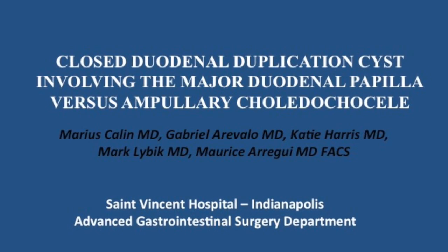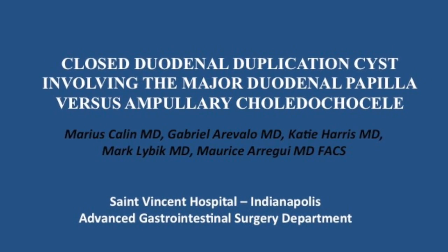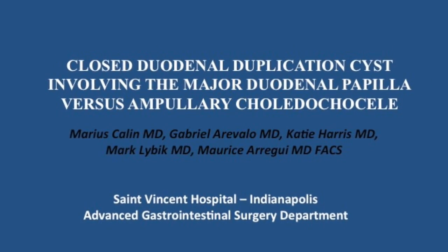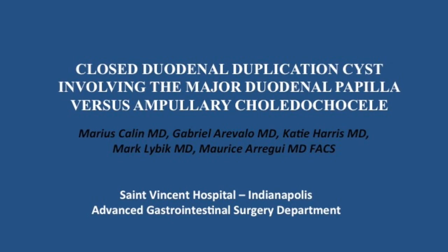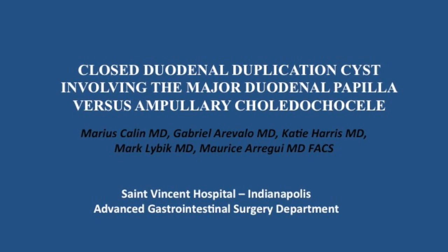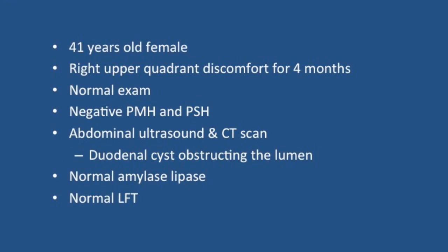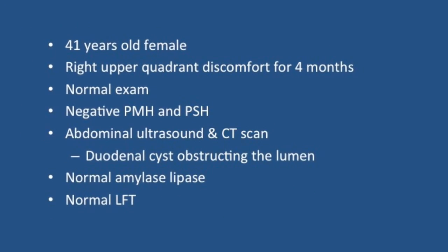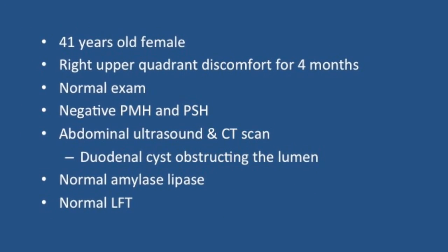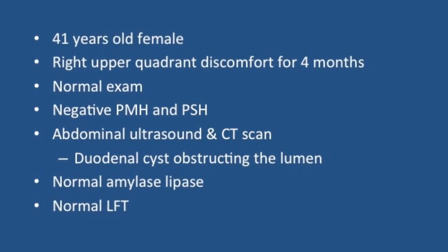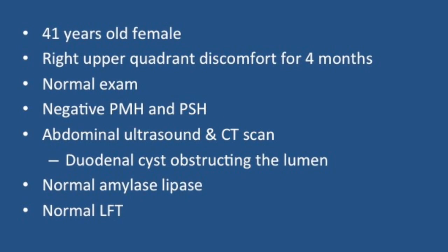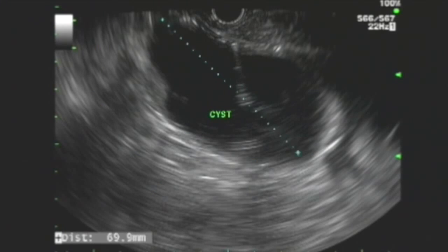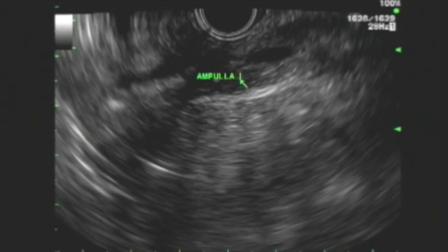Case report of a closed duodenal duplication cyst involving the major duodenal papilla versus ampullary choledococele. A 41-year-old female presented with right upper quadrant pain for four months. CT and abdominal sonogram were suggestive of a duodenal cyst.